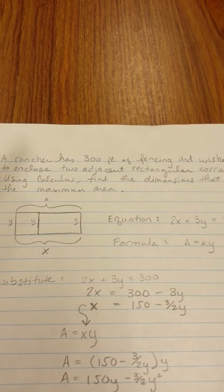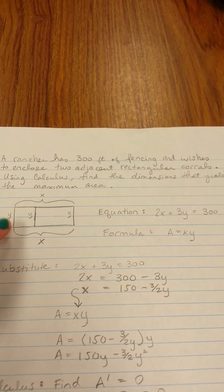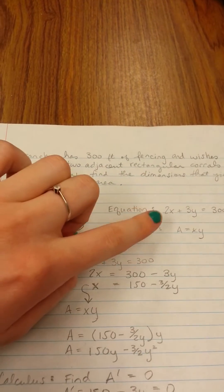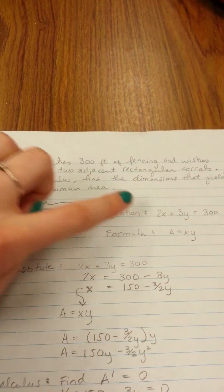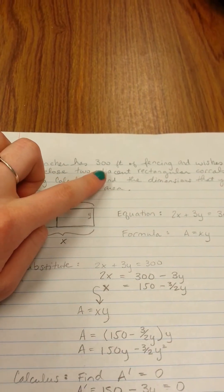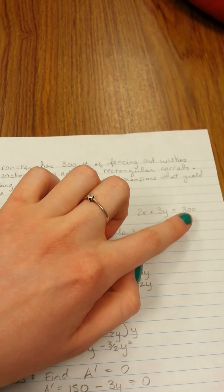First thing you want to do is make an equation. So we can see that we have three Ys and two Xs. So 2X plus 3Y, and we were told that we have 300 feet of fencing, so that equals 300.